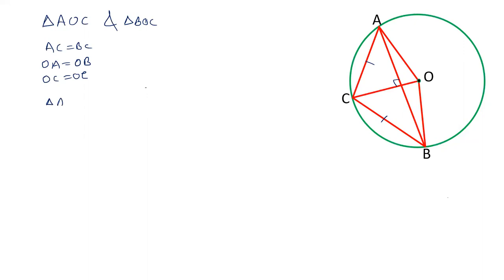OA is equal to OB and OC is equal to OC. So triangle AOC is congruent to triangle BOC by side side side congruency and therefore angle ACO is equal to angle BCO.